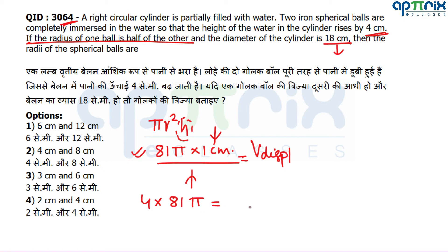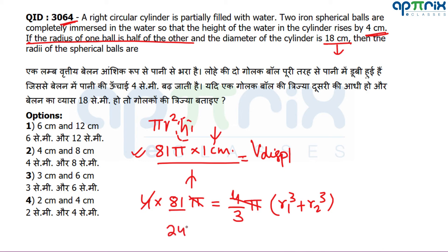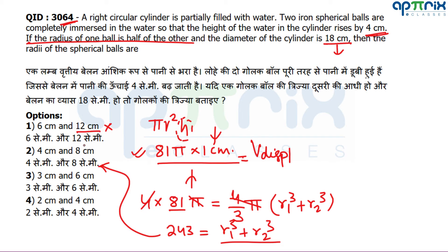The combined volume of the two spheres is (4/3)π(r1³ + r2³) = 324π. Cancelling 4π from both sides, we get r1³ + r2³ = 243. Since r1 = r2/2, substitute and solve. Checking options: r2 = 6 gives r2³ = 216, r1 = 3 gives r1³ = 27, and 216 + 27 = 243. This is the correct answer.